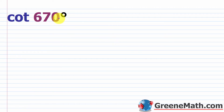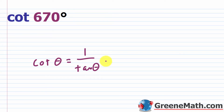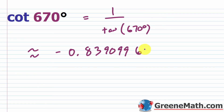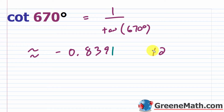Now let's look at the cotangent of 670 degrees. You might not have a cotangent key, but you likely have a tangent key. From the reciprocal identities, cotangent of theta equals 1 over the tangent of theta. So this equals 1 over the tangent of 670 degrees. Hit 1, divided by, tangent key, type 670 in the parentheses, close them, and hit enter. The result is approximately negative 0.8390996312. Rounding to the nearest ten-thousandth — the digit following the zero is 9, so we add 1, giving us 1 — the cotangent of 670 degrees is approximately negative 0.8391.